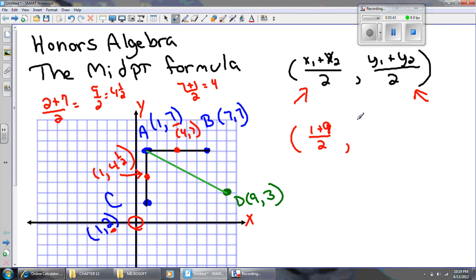And then the y-coordinates are 7 and 3. And I'm going to divide by 2 because I'm averaging. And when I do that, I'm going to get 5, 5. Now let me plot the point 5, 5.